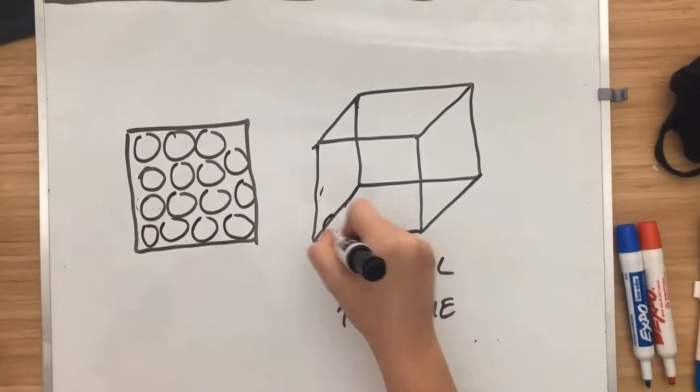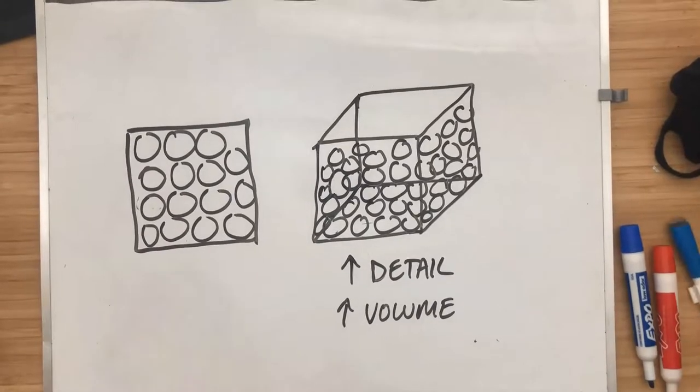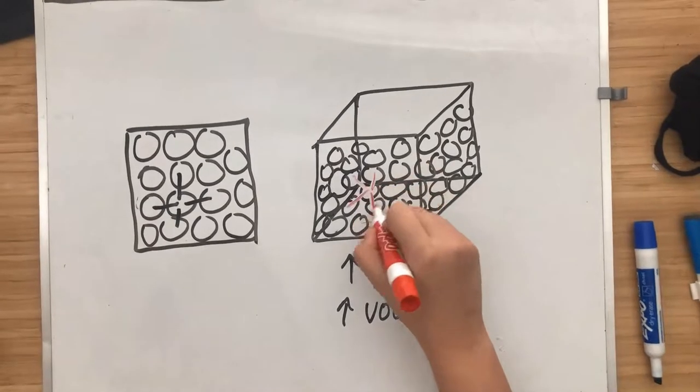If I were to fill up both of these shapes with beads, in the square, one bead only touches a few other beads in the square, but in the cube, one bead touches a lot of its different neighbors.